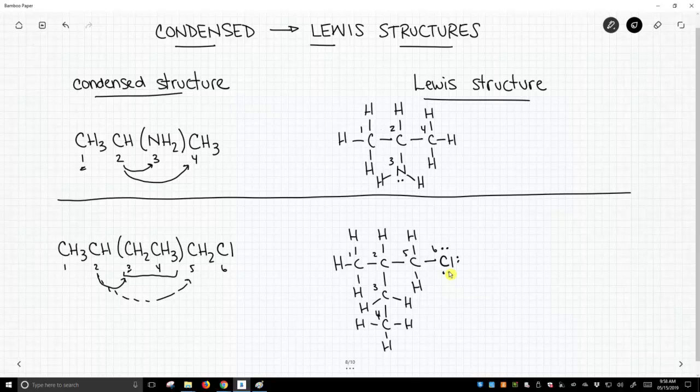And those are those structures. So it is fairly easy to convert condensed structural formulas into Lewis structures. You just have to be careful and move methodically from the left to the right and observe what the parentheses tell you and how to incorporate branches. Thank you.